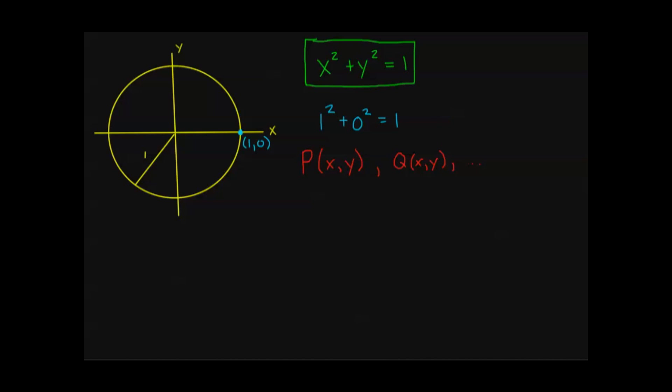So I want to do a little bit more detailed example here before we move on. Let's just say I have the point P root 3 over 3, root 6 over 3. And I want to know if this point P is on my unit circle.